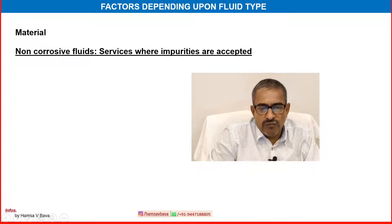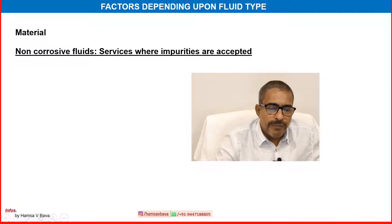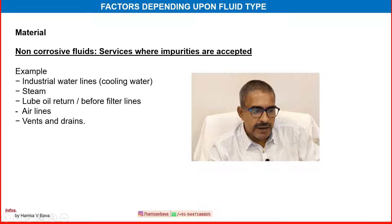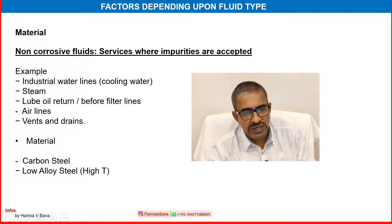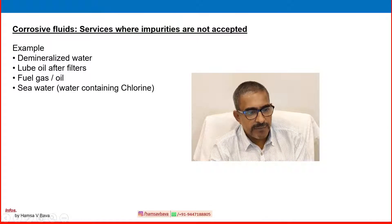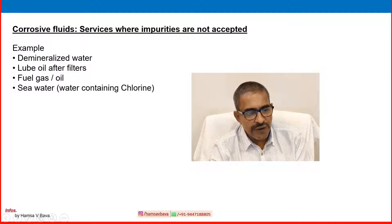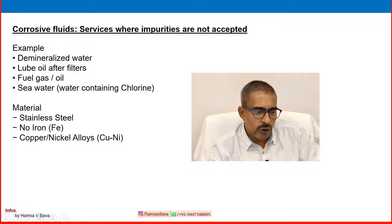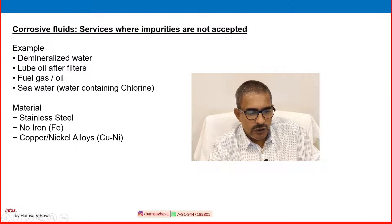Factors depending upon fluid type in design: for non-corrosive fluids — services where impurities are accepted — examples include industrial water lines, cooling water, steam, lube oil before filter, air lines and vent lines. Materials used are carbon steel and alloy steel. For corrosive fluids — services where impurities are not accepted — examples include demineralized water, lube oil after filter, fuel gas and oil, sea water, and water containing chlorine. Materials include stainless steel, non-ferrous metals, copper-nickel alloys, and cobalt and nickel alloys.